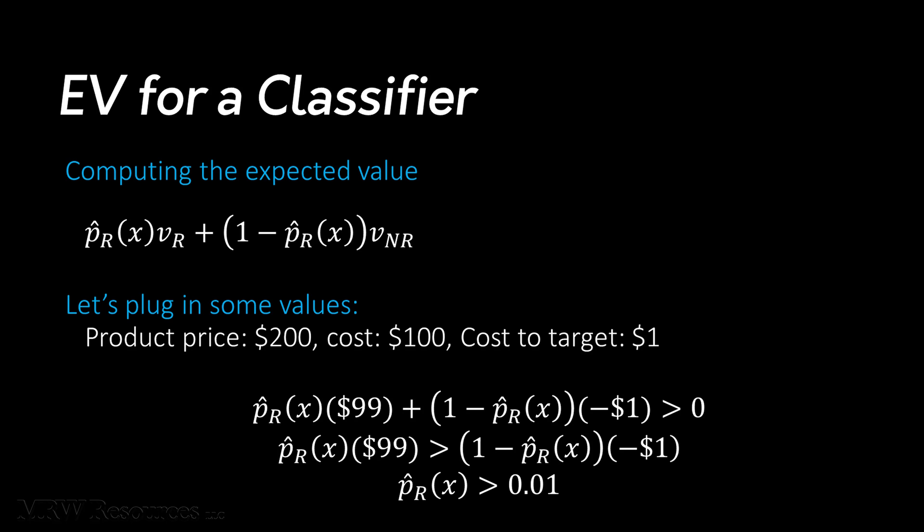So how do we know whether we make a profit? In other words, is our expected value of targeting these consumers greater than zero? Well, if we plug our numeric values into the equation and remove all the elements that include the estimated probability of a response over to the left side of the equation, we can see that we have a positive value, i.e. a profit, as long as our estimated probability of response exceeds 1%.